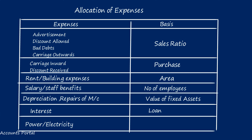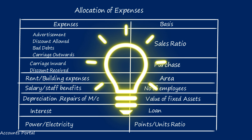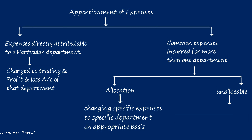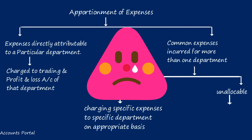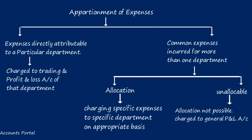Depreciation, machinery repairs, and maintenance are charged to departments based on the value of fixed assets. Interest charges are based on the loan amount. Electricity, power, lighting, or heating costs are allocated based on the energy consumed by each department or the number of light points. If each department has a sub-meter, the units ratio is applied. Unallocable expenses — where allocation is not possible — are charged to the General Profit and Loss Account. Examples include audit fees and income tax.